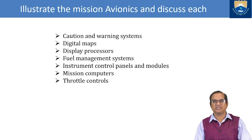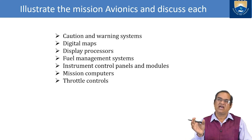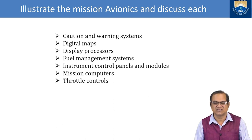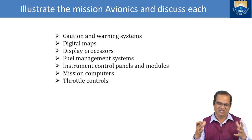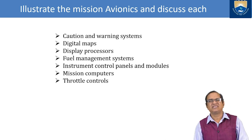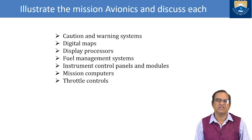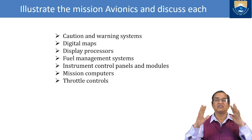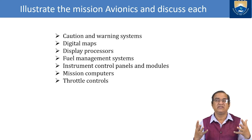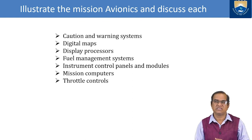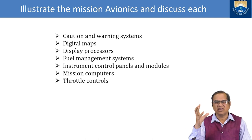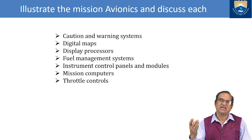In avionics we also have digital maps. In older days, pilots carried paper maps and measuring tools, with one crew member dedicated to navigation. Nowadays, a screen directly shows the pilot the exact map with the aircraft's current location displayed. Display processors are computer-operated processors that operate different displays in the cockpit — MFDs, HSI, altimeter, and all instrumentation — shown as required on the cockpit displays.